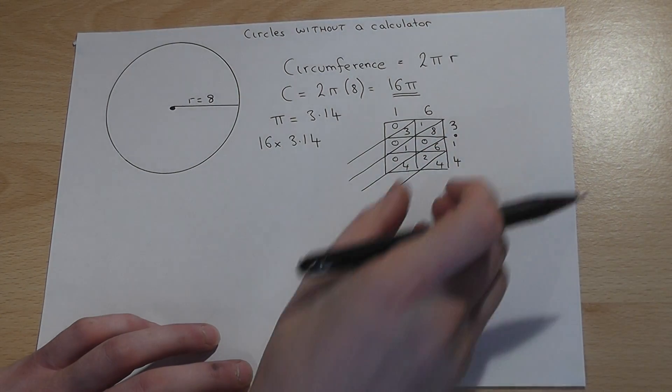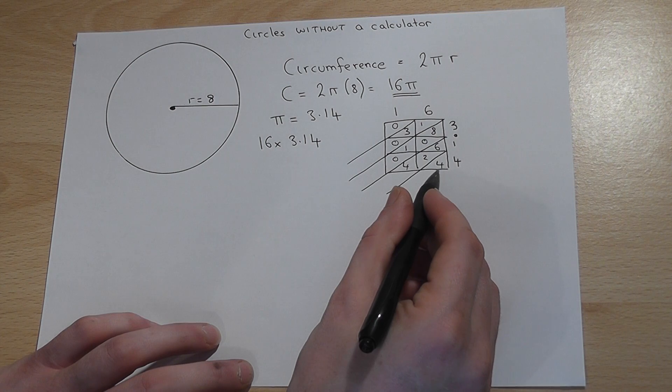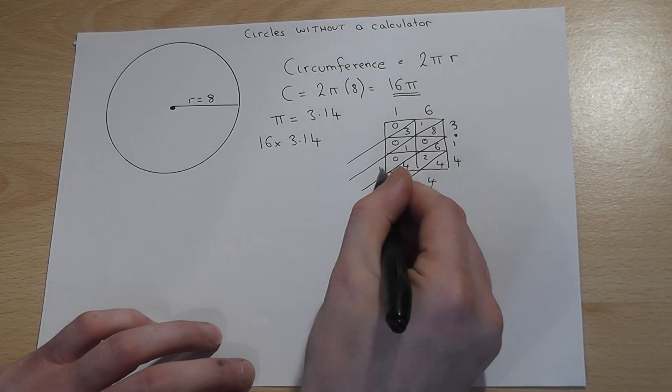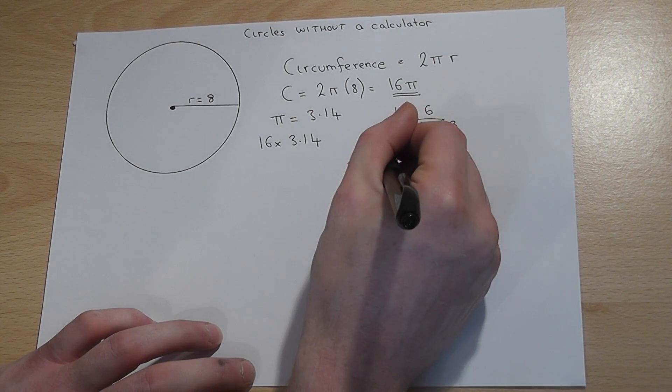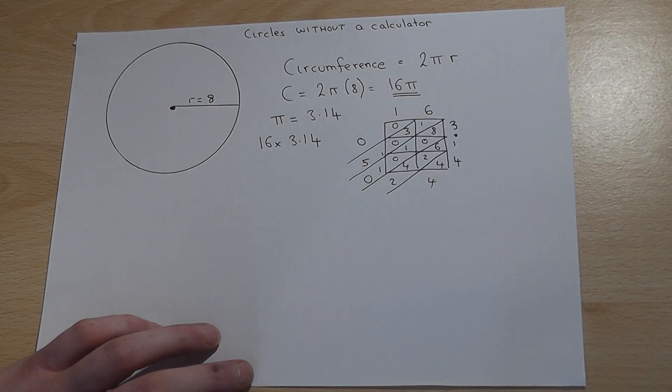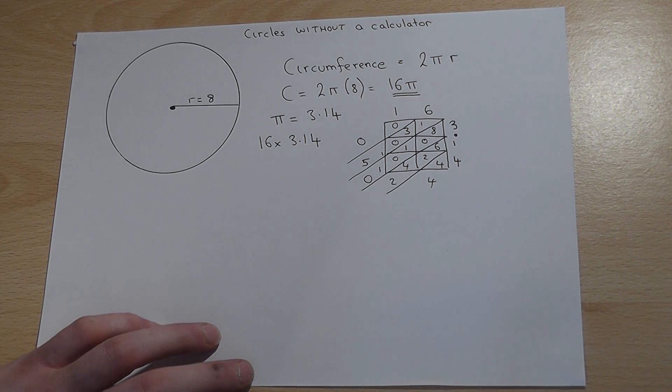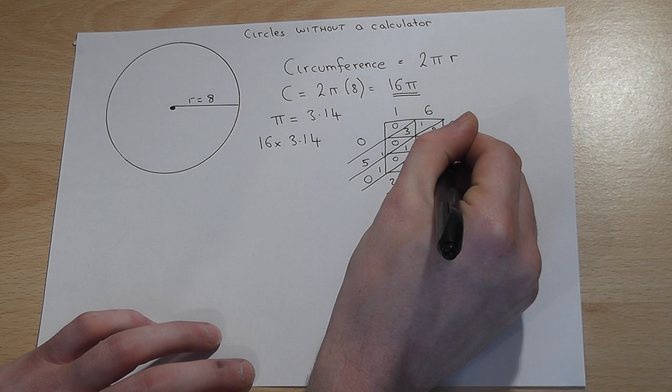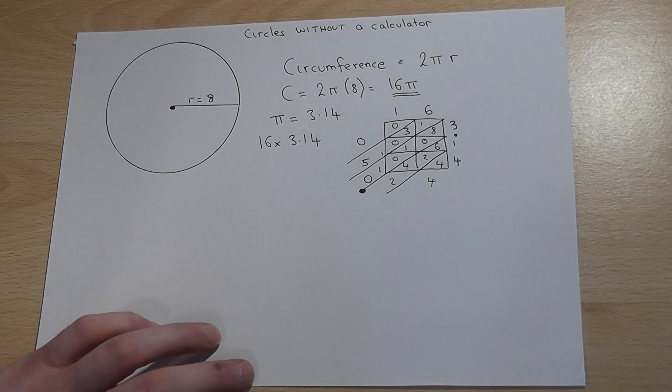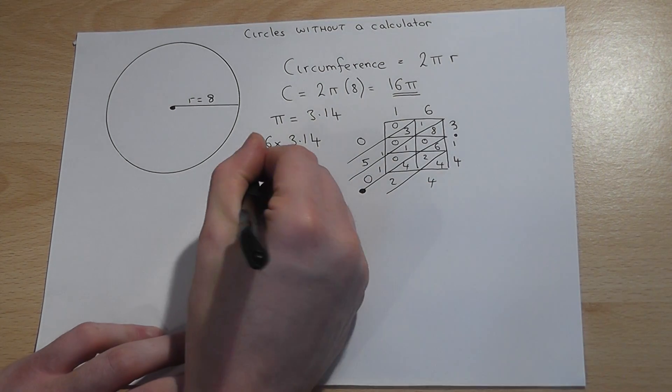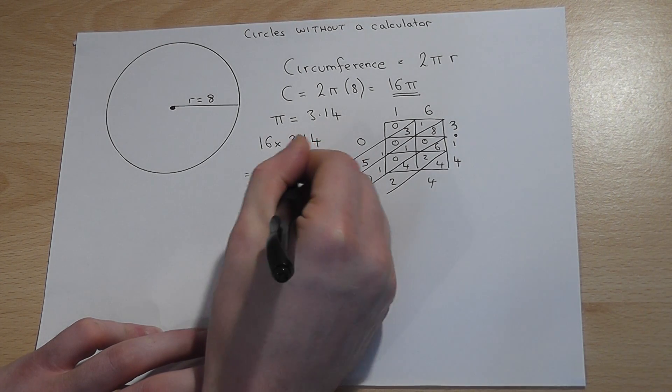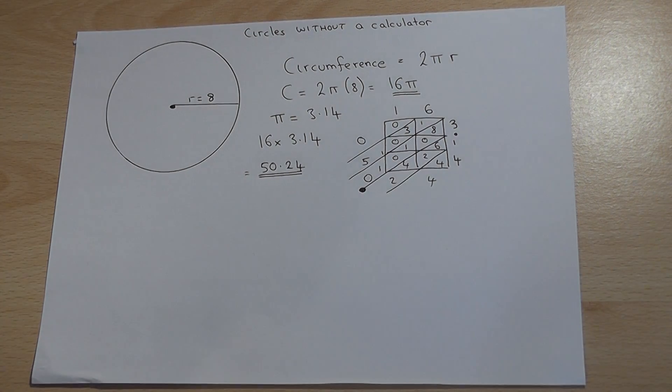And you now add up the diagonals, starting with the lowest value. 4, 6, 4 and 2 is 12, so 12, carry the 1. 1, 1, 8 is 10, carry the 1. 1, 1, 3 is 5 and 0. And the dot just falls down that diagonal there. So the answer equals 50.24, and that is the circumference of the circle.